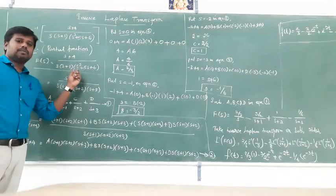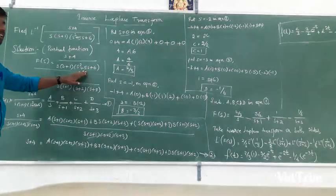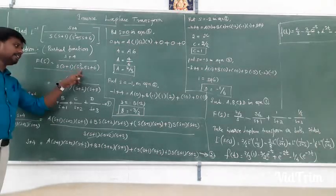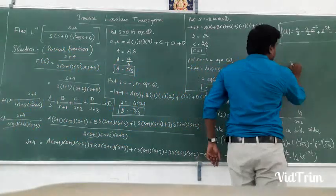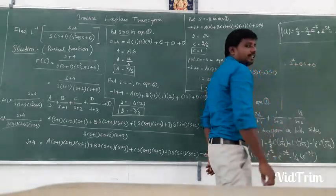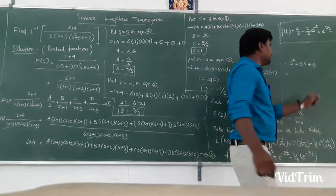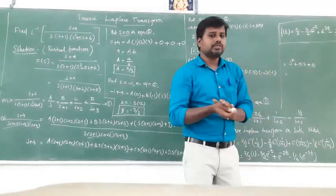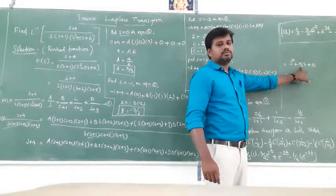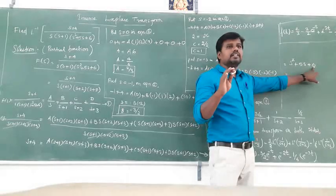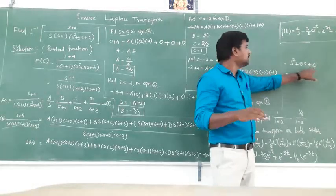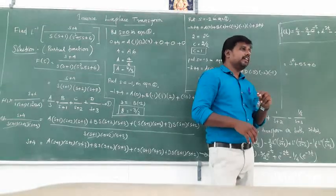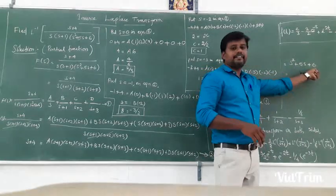This is a quadratic formula. S squared, the S term and the constant. The equation S squared plus 5S plus 6 needs to be factored. If you use the constant method, the constant is 6 and the coefficient is 5. You need two numbers that multiply to 6 and add to 5, which gives 2 and 3.